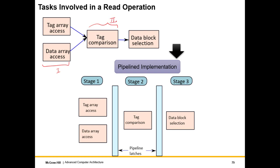The comparison is also a slow process. We take two tags and subtract one from the other, or we compare the bits by computing an XOR — if any bit pair differs, the values are not the same. Regardless of how we do it, this takes one full sub-stage. Finally, if there is a match, we select the data block. We can pipeline this design by inserting a pipeline latch between adjacent stages: tag array/data array access, tag comparison, and data block selection. Something similar can be done for a write operation.